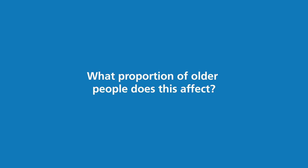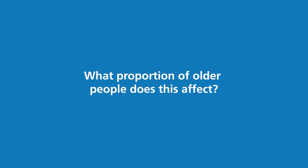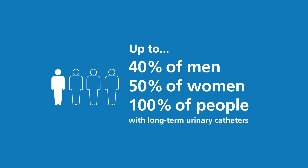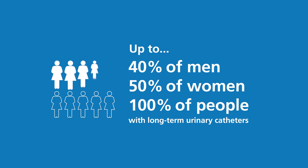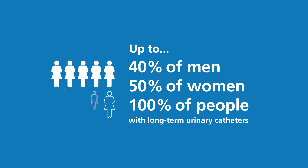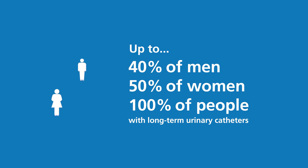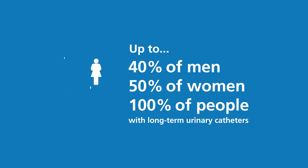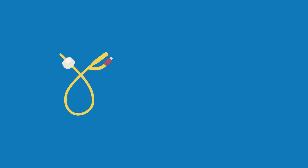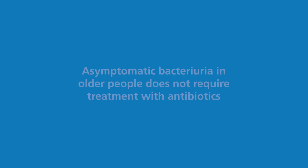So what proportion of older people does this affect? Studies have shown that up to 40% of older men, 50% of older women, and 100% of people with long-term urinary catheters have bacteria in their urine without signs or symptoms of an infection being present.